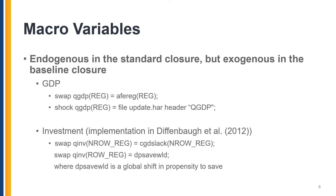Investment and GDP are endogenous in the standard GTAP closure but may be exogenous in the updating simulation. To impose historical changes in GDP, the real GDP variable QGDP is swapped with primary factor augmenting technical change AFEREG, such that real GDP becomes exogenous and can be shocked, and primary factor augmenting technical change is endogenously determined to accommodate the shock to GDP. The model code is modified so that endogenous technical change augments only non-accumulable endowments.